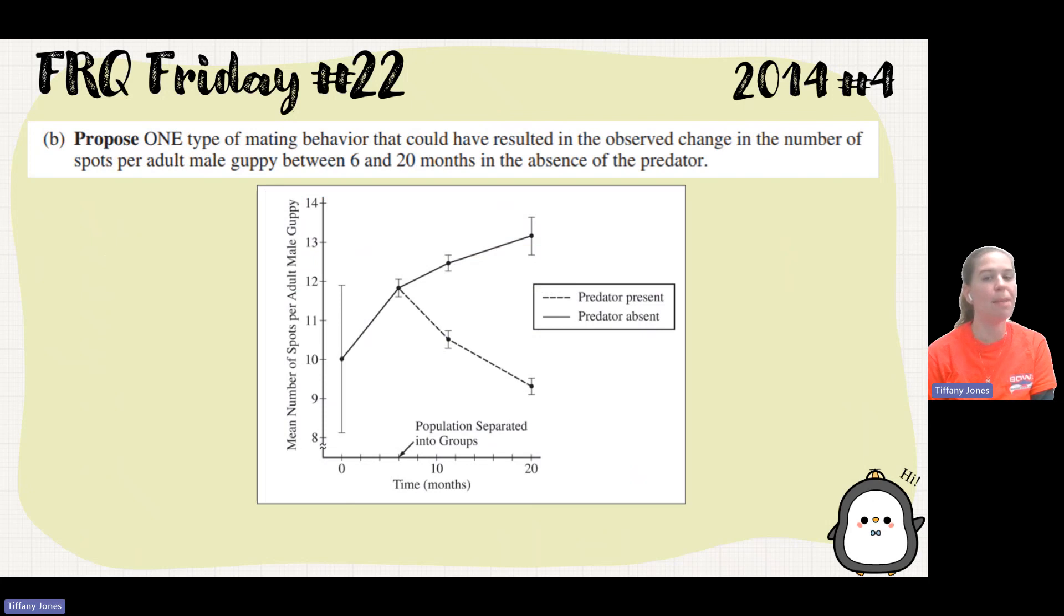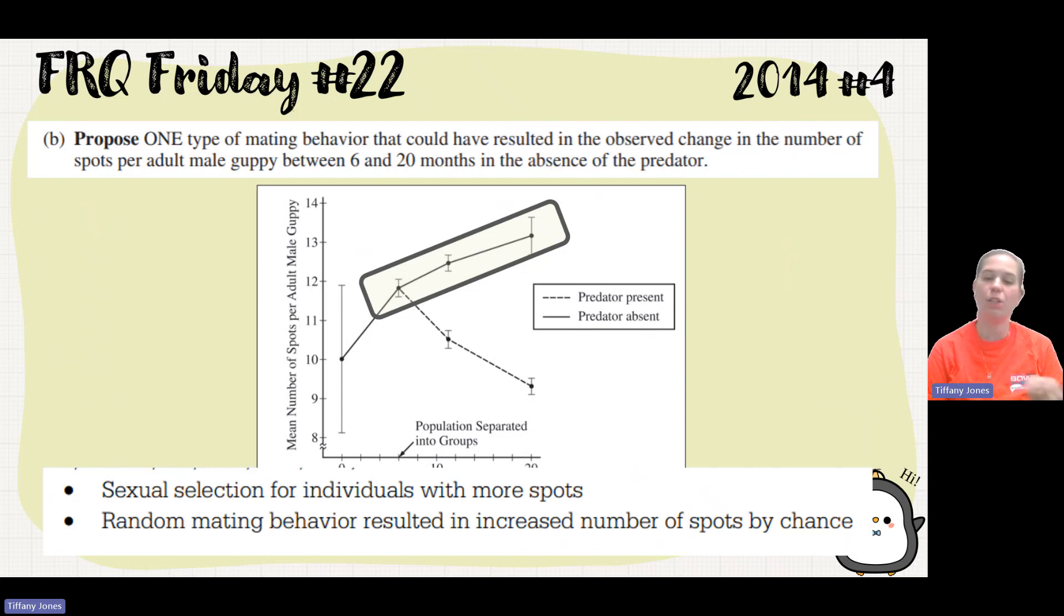Part B is to propose one type of mating behavior that could have resulted in the observed change in the number of spots per adult male guppy between six and 20 months in the absence of predator. So if we look at our graph and we look at the key, it tells us that the absent predators are solid lines. So when there is no predator present, we see an increase in the number of spots, and they ask us to come up with a mating behavior. That just makes me think of sexual selection. Due to the fact that the individuals with more spots were more favorable to mate with, we see an increase in the number of spots. There was a sexual preference, a sexual selection for individuals with more spots. Or you could just say random mating behavior that resulted in an increased number of spots by chance.